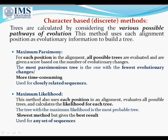The maximum likelihood method also uses each position in the alignment, evaluates all possible trees, and calculates the likelihood for each tree using an explicit model of evolution — unlike parsimony, which just looks for fewer evolutionary changes. The likelihoods for each aligned position are then multiplied to provide the likelihood for each tree, and the tree with the maximum likelihood is the most probable tree. This method is the slowest but gives the best results and can be used for any set of sequences.